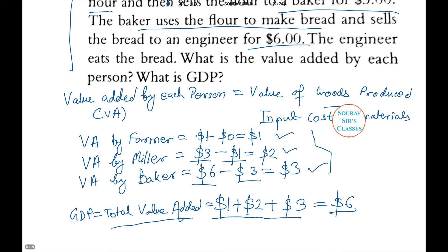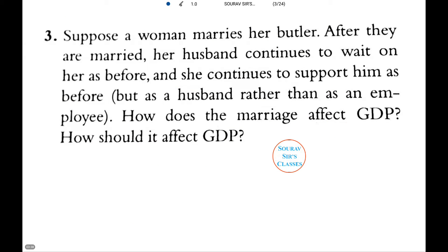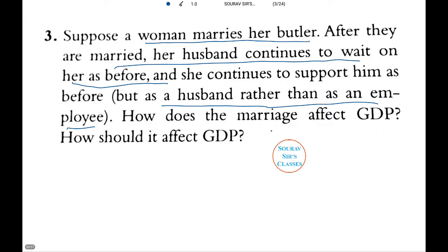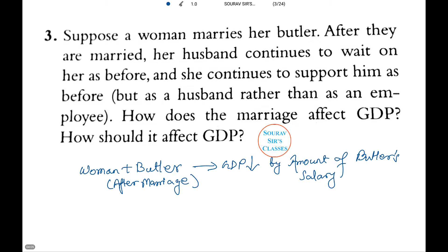Now we are given a situation where a woman marries her butler. After they are married, her husband continues to wait on her as before but as a husband rather than as an employee. We need to figure out how this marriage affects GDP. After marriage, the GDP decreases by the amount of the butler's salary. This is because actual GDP is an imperfect measure of economic activity — the value of some goods and services is left out. Once the butler's work becomes part of household chores, his services are no longer counted in GDP.